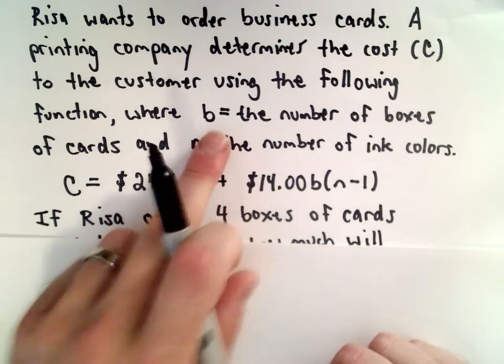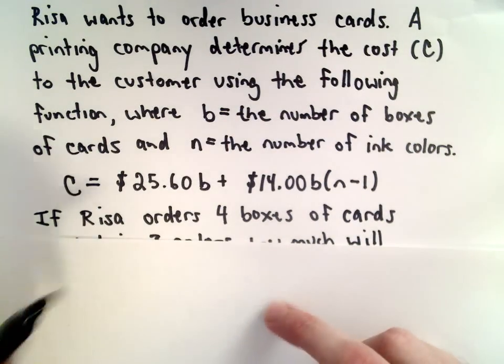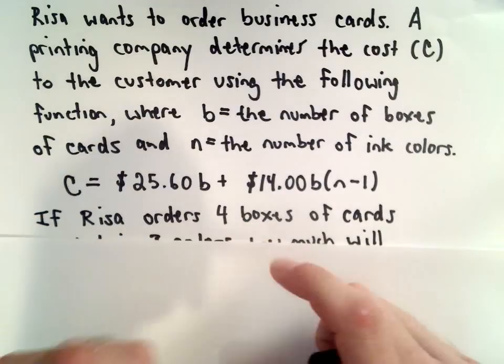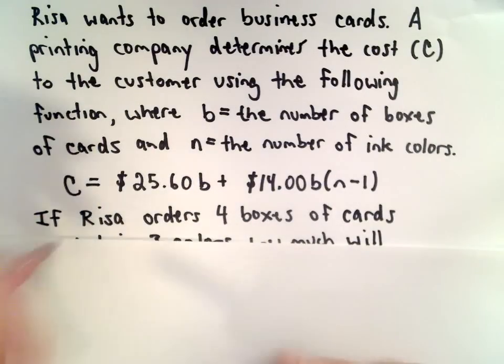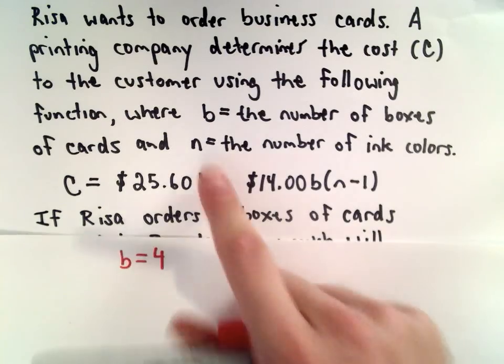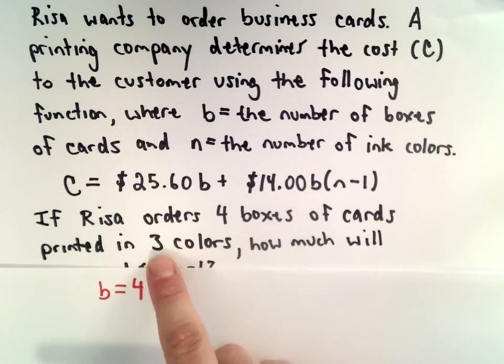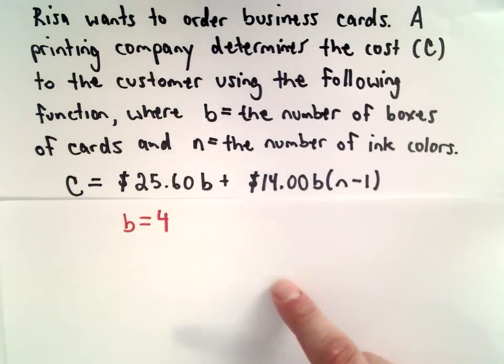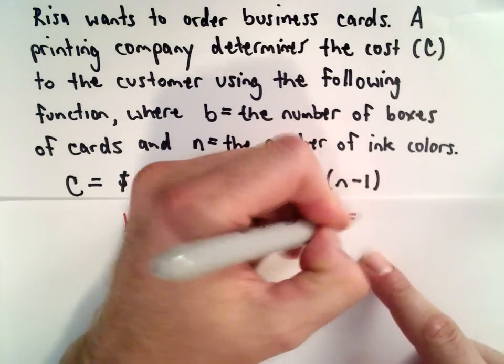Okay, so B represents the number of boxes. She wants to order four boxes, so in this case, B will be equal to 4. And N represents the number of ink colors. She wants three colors, so the N value is going to equal 3.